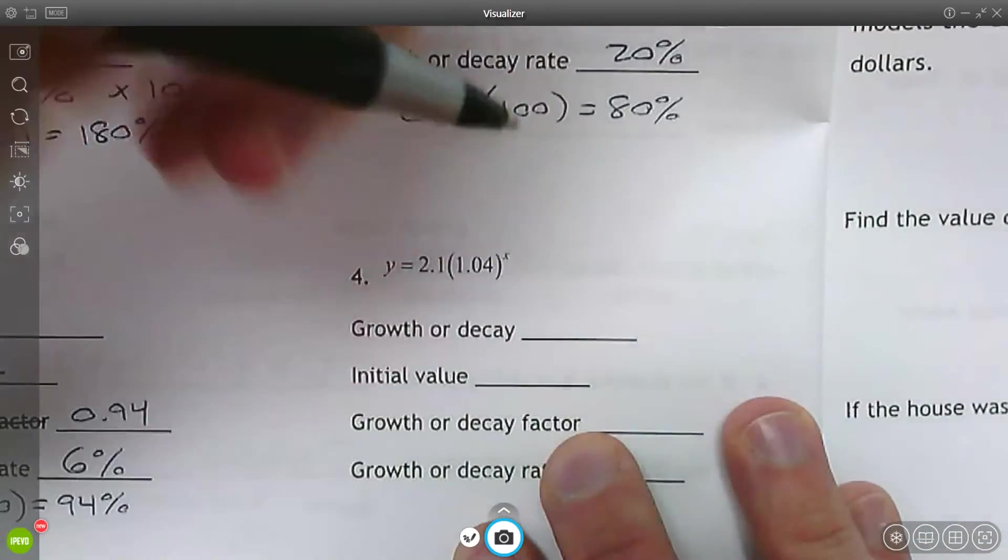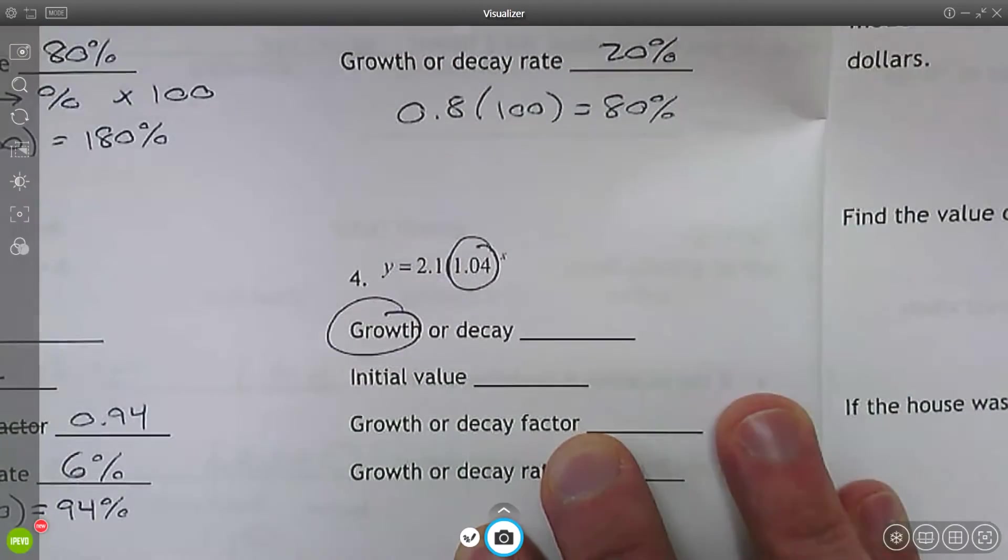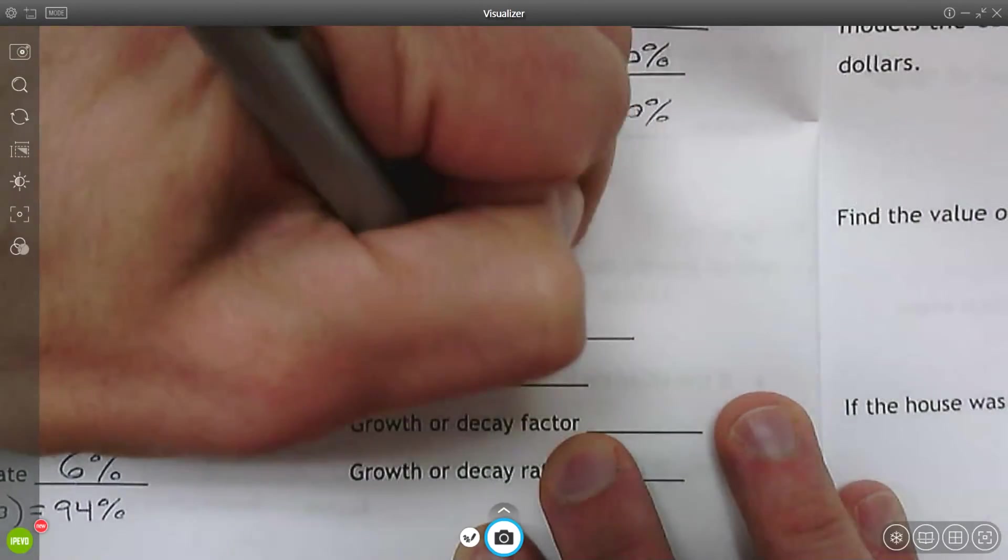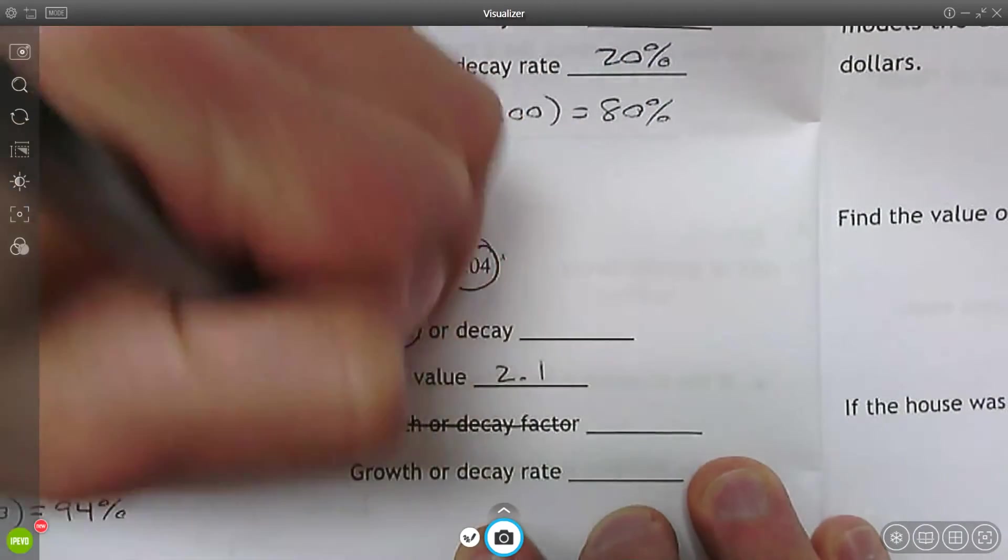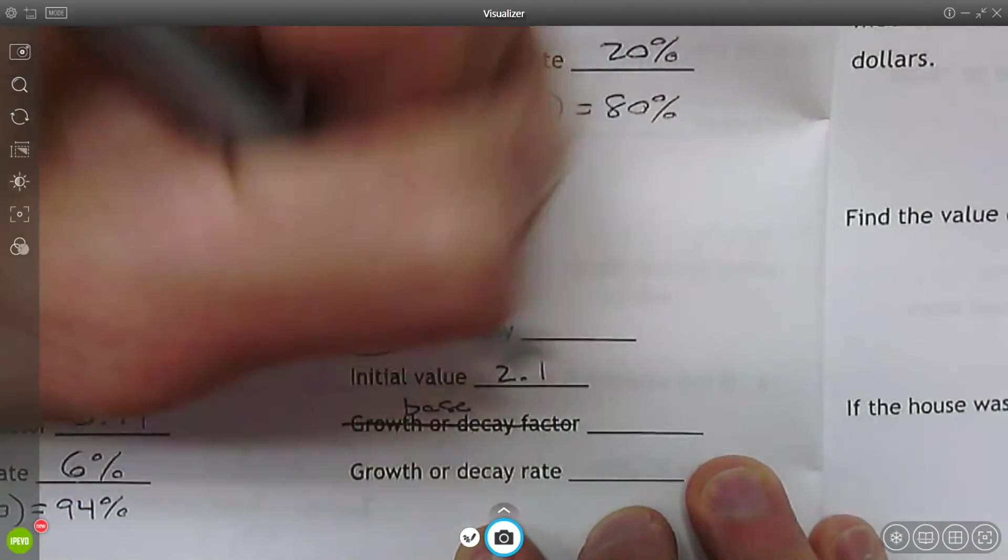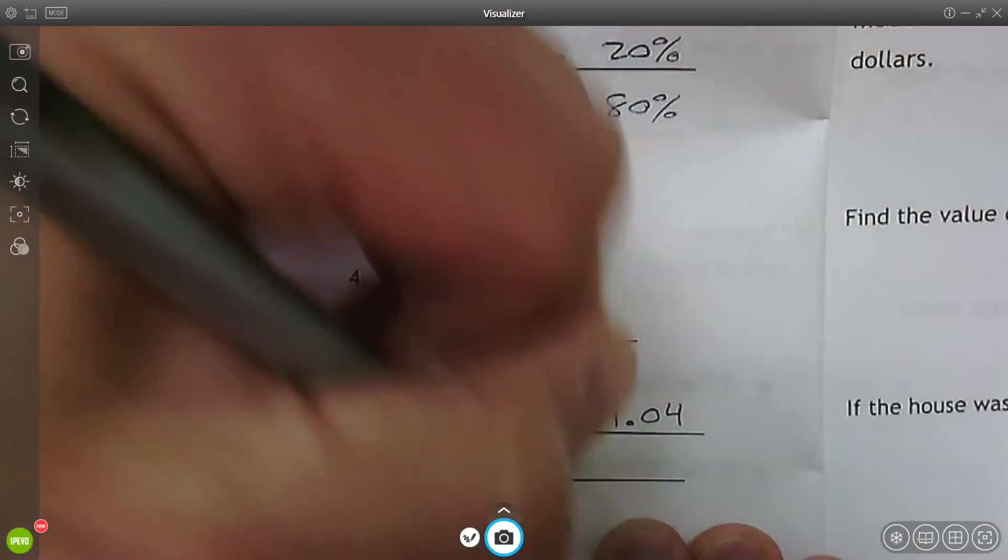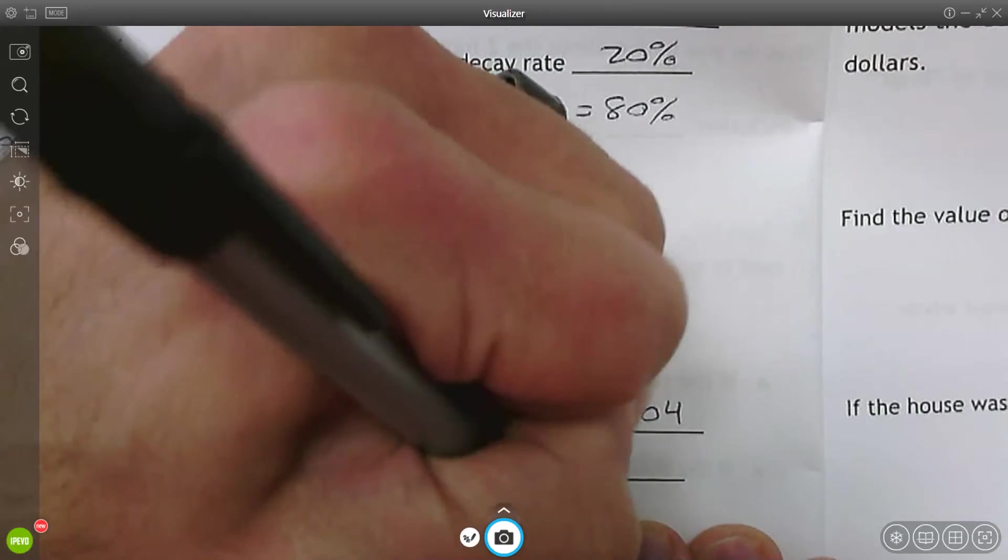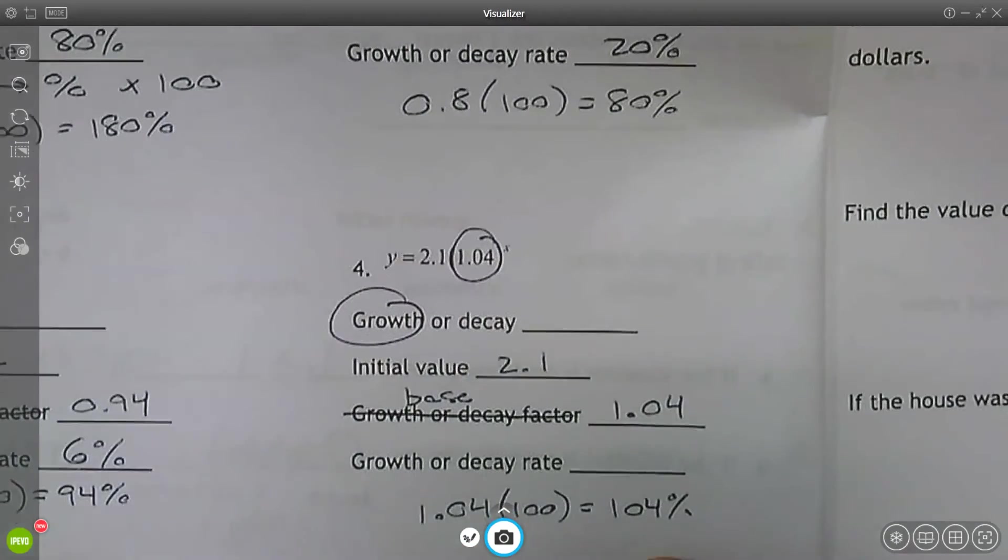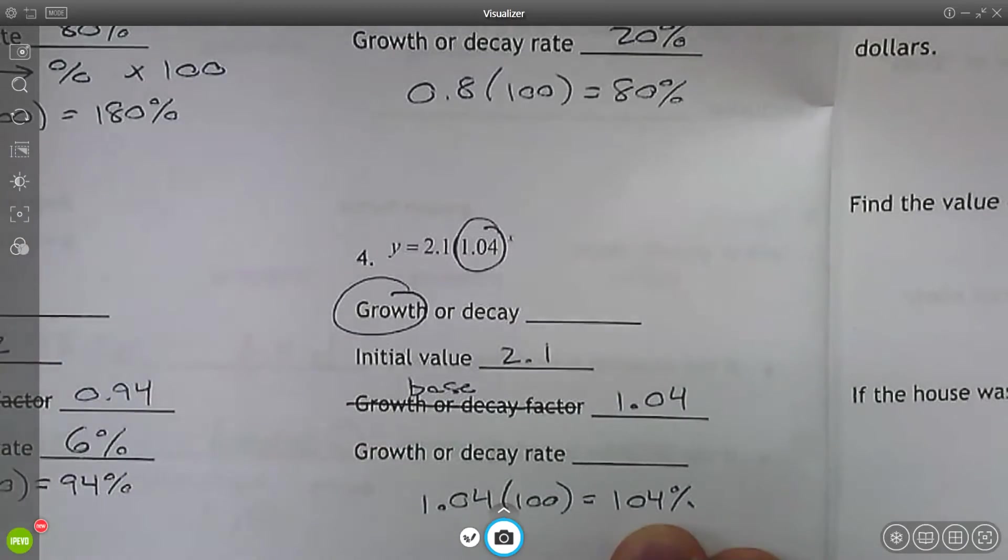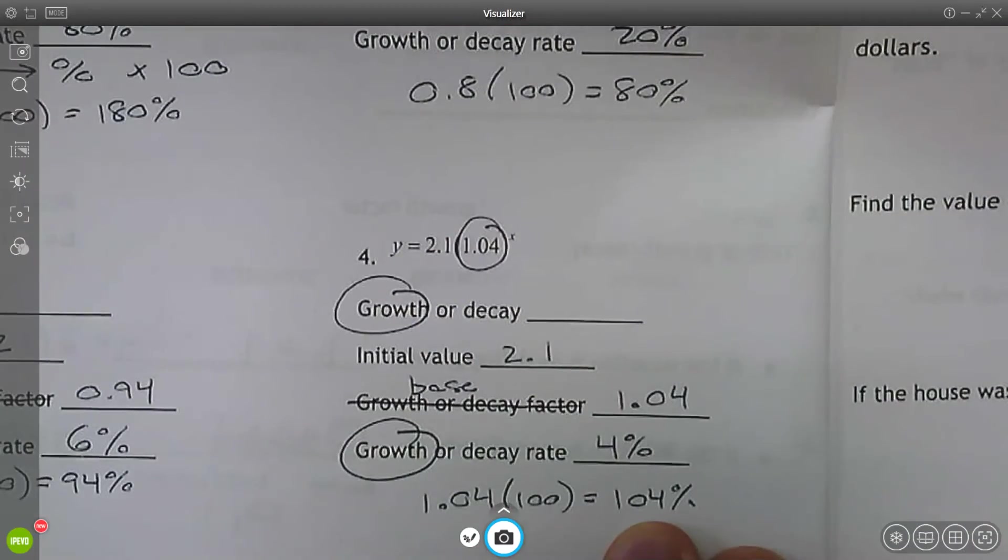And for number four, the base is 1.04. So this is exponential growth because that's larger than one. The initial value is 2.1. So again, we're referring to this as the base. The base is 1.04. I'm going to take that base, convert it to a percent. I get 104%. So I started at 100. Now I'm at 104. This is a 4% exponential growth.